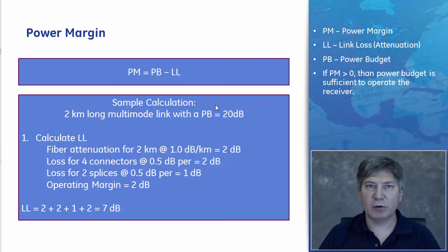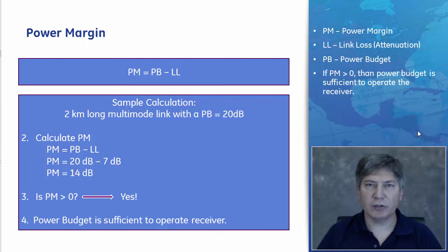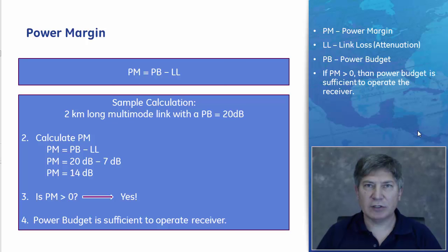For a 2 kilometer long multi-mode link with a power budget of 20 dBs, first calculate the total link loss. In our example, the total link loss is 7 dBs. Next, calculate the power margin: subtract the link loss of 7 dBs from the power budget of 20 dBs, resulting in 14 dBs. If the power margin is greater than 0, the power budget is sufficient to operate the receiver. If less than 0, a repeater must be added or changes made to the system. In our example, we had adequate power.